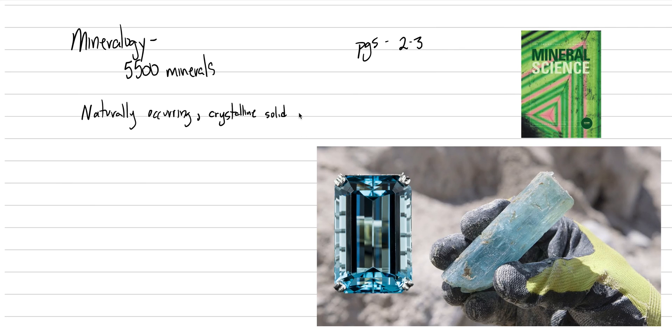So a mineral is a naturally occurring crystalline solid with a definite homogenous chemical composition, usually formed by inorganic processes.